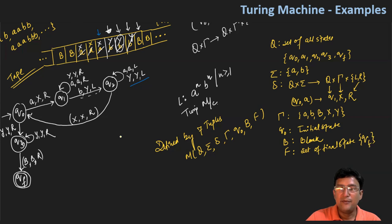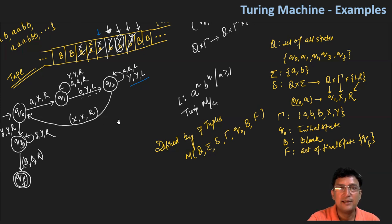So these are the seven tuples by which we define the Turing machine, and we have seen examples using the Turing machine that we designed in the last lecture. Thanks for watching. We will take more examples related to the Turing machine in the subsequent lectures.